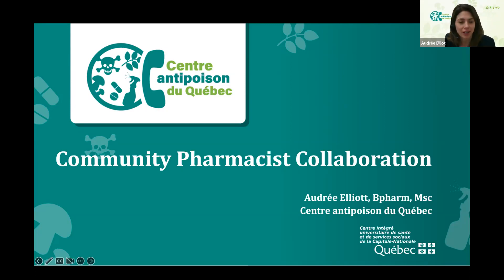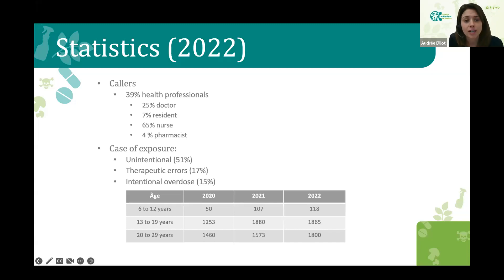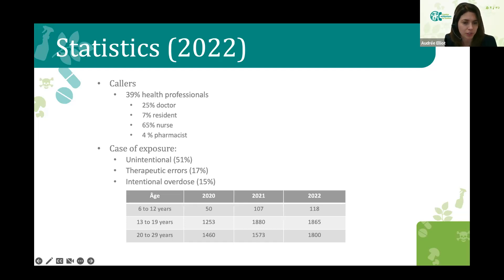Today I want to chat with you about a collaboration project we did at the Quebec Poison Centre with community pharmacists. When we looked at our 2022 annual report statistics, we realized that 39% of our callers at the Quebec Poison Centre are health professionals, but from these, only 4% are pharmacists — including both community and hospital pharmacists. Pharmacists seem to call the Poison Centre not that much, and the first question raised was: why? The second statistic was that therapeutic errors are quite often the reason for calls we receive — 17% of them.